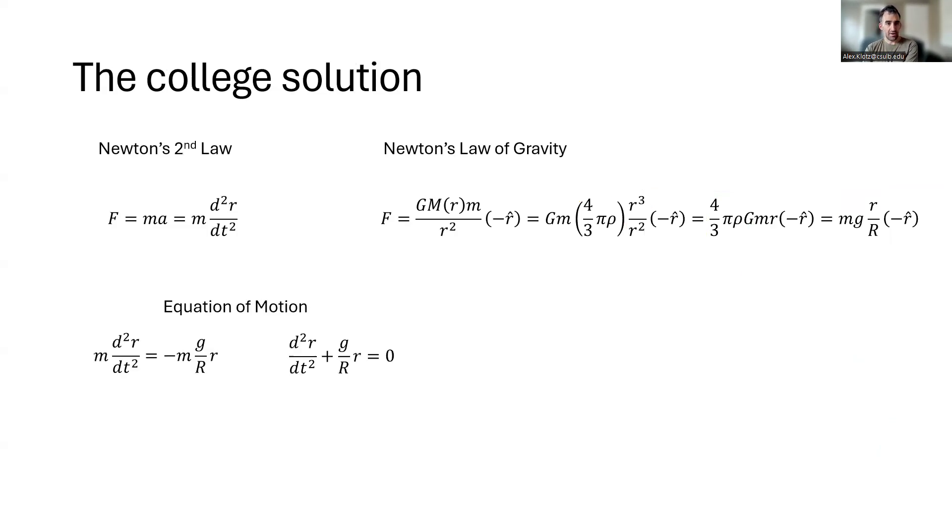So putting this together, F equals ma equals GMm over r squared. We cancel the mass of the falling thing, we put everything on one side of the equation, and we are left with this differential equation, which every physicist knows is the equation for simple harmonic motion, a mass on a spring.